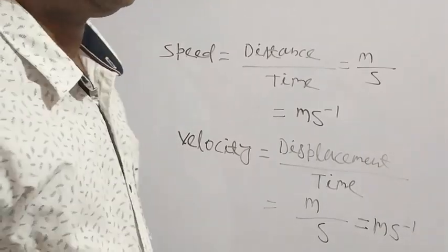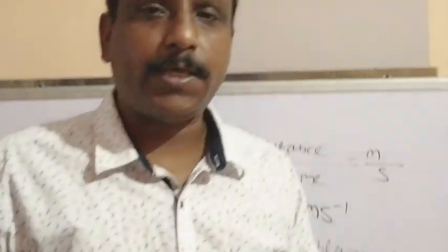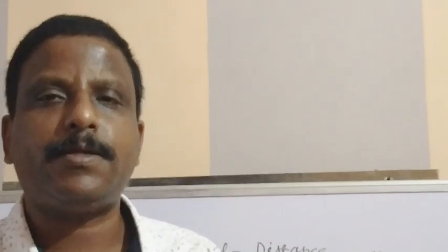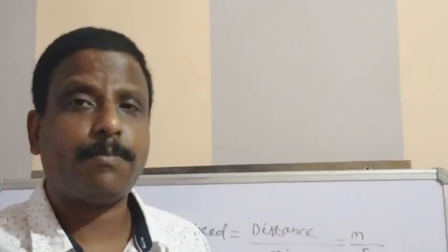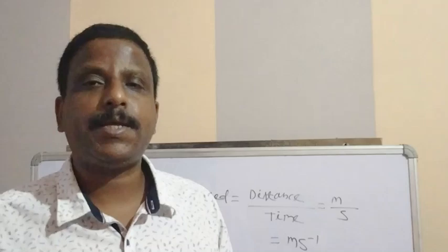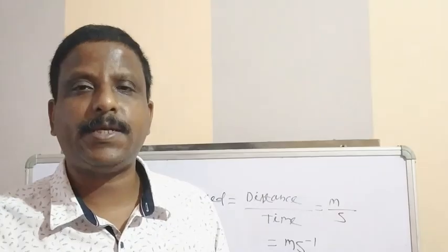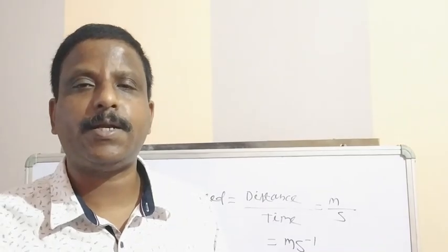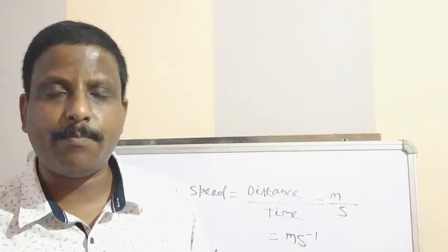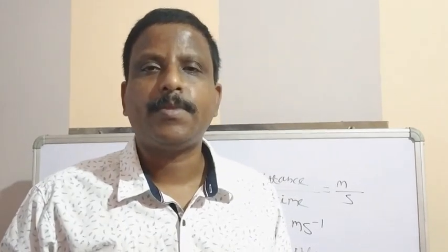So those are the differences between speed and velocity. There are other things like different types of motion which I will explain later. But these parts — speed and velocity, distance and displacement — are the most important. Numericals will come in the exam on these topics. Hope you understood. If not, you can call me on my WhatsApp number. Thank you, bye — I will meet you again in the next video.